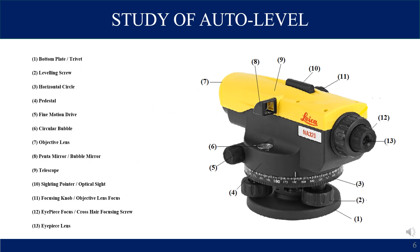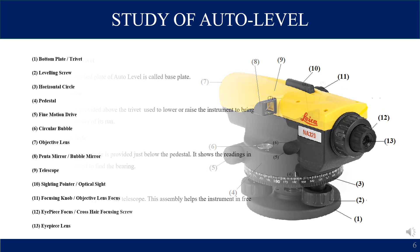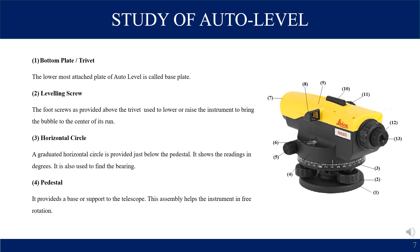Now we will discuss the various parts of the automatic level. On the right side, the picture has numbering given, and on the left side the details are shown. The parts are: number one - bottom plate or trivet; number two - leveling screw; number three - horizontal circle; number four - pedestal; number five - fine motion drive; number six - circular bubble; number seven - objective lens; number eight - pentamirror or bubble mirror; number nine - telescope; number ten - sighting pointer or optical sight; number eleven - focusing knob or objective lens focus; number twelve - eyepiece focus or crosshair focusing screw; number thirteen - eyepiece lens.